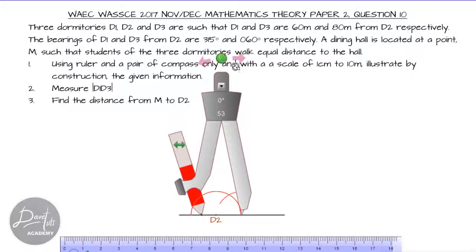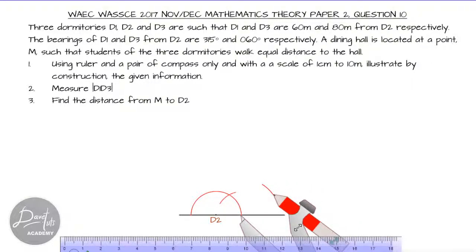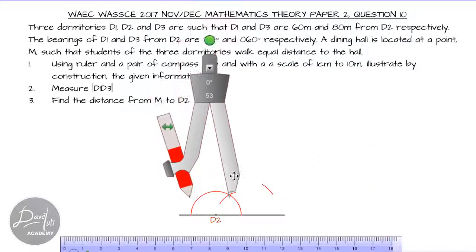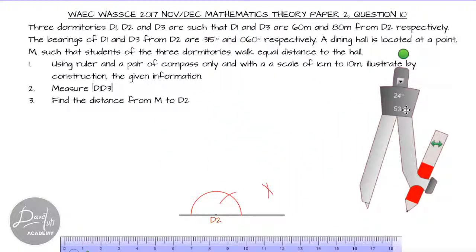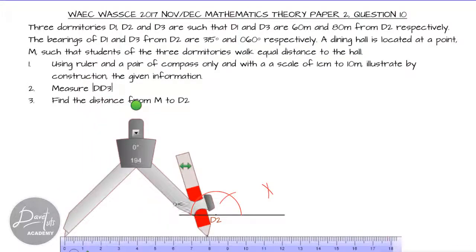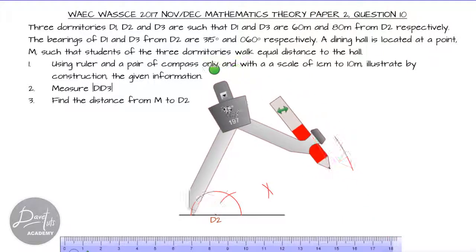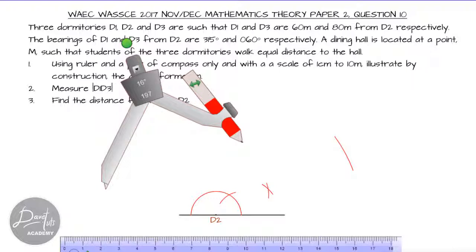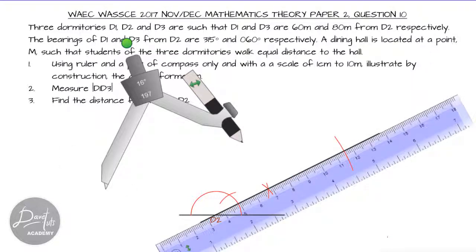If we have 60 degrees from the right and bisect it, that gives us 30 degrees from the right, which equals 60 degrees from the north of D2. Bisecting this 60-degree angle gives us our direction. D3 is located 80 meters from D2, so taking the compass to the ruler, we mark off 8 centimeters — since 1 cm equals 10 meters. The arc marked from D2 is D3, and we join it with a straight line to D2.